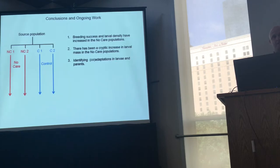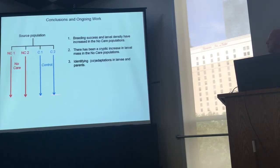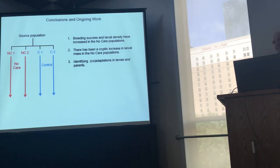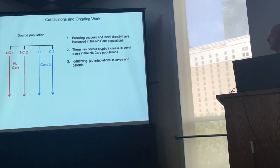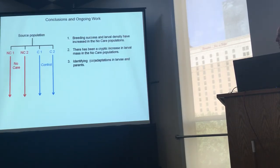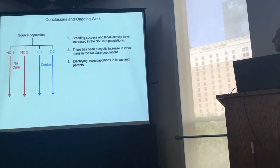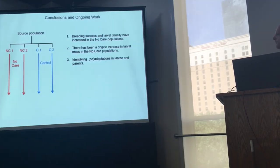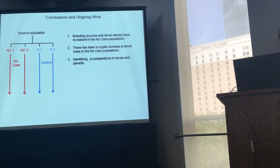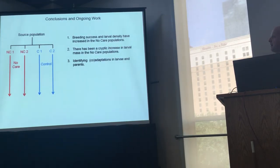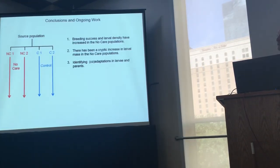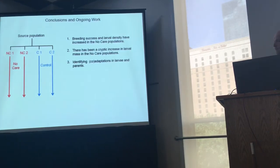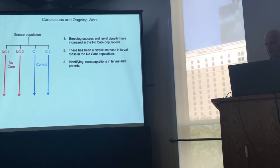This is just a progress report of an experiment that's ongoing, and we hope to continue for quite a while. I hope it gives you the sense that these populations are adapting to these new environments — breeding success and larval density both increase in the no-care populations. And it looks like there's been a cryptic increase in larval mass that's been masked by a coincident shift in larval density. The work ongoing now is trying to identify the adaptations in parents and their larvae that are allowing populations to adapt to this new care environment, and we're looking at things like how well the parents prepare the carcass before we remove them, as well as how well the larvae self-feed.